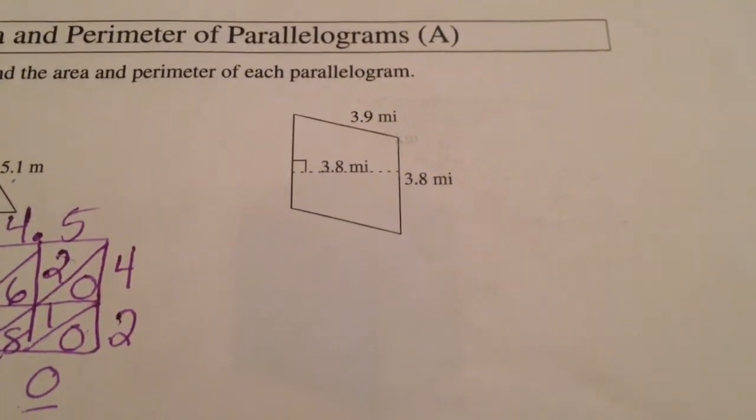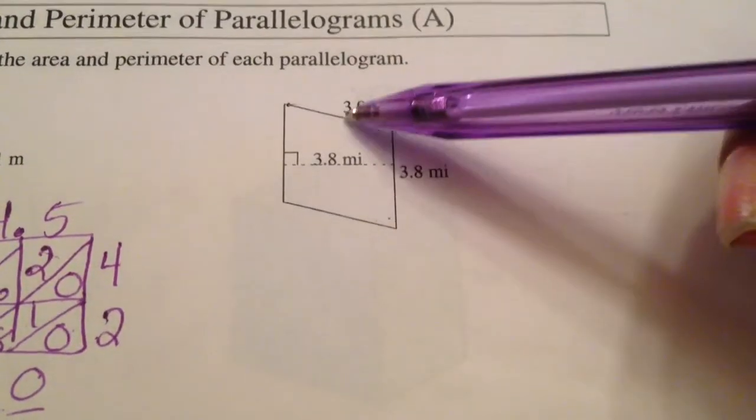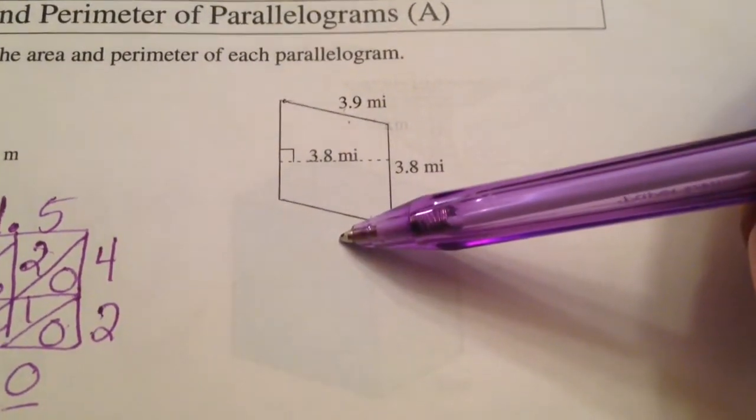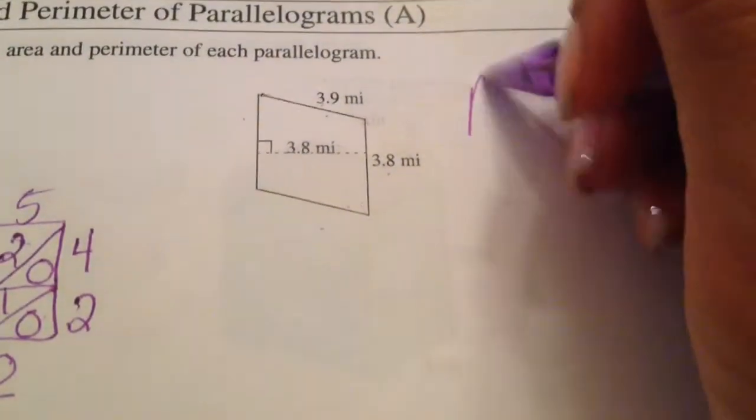I'm not going to worry about perimeter because we know how to add up the sides and we know that the opposite sides are the same. So 3.9, 3.8. Instead I'm just going to worry about area.